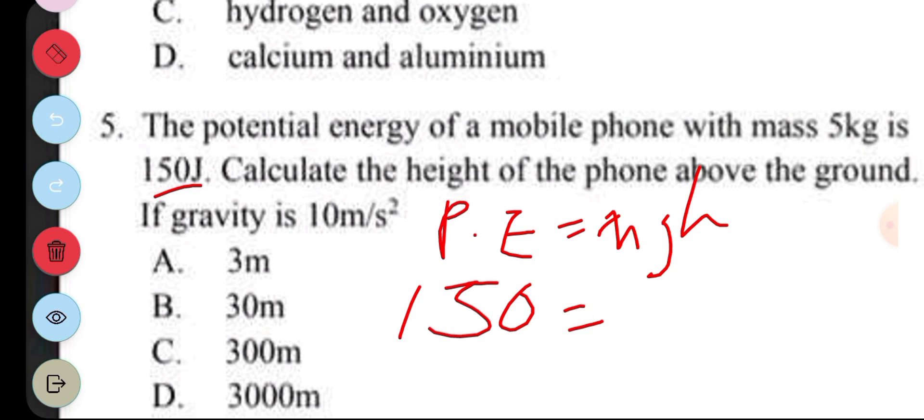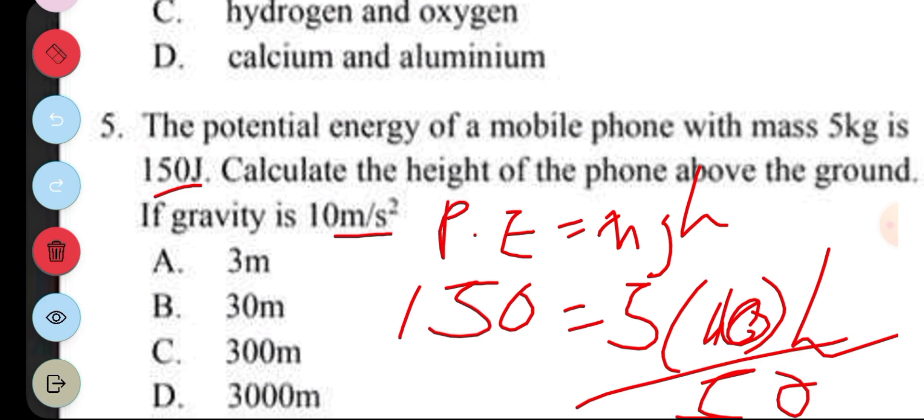150 equals mass is 5, gravity acceleration is 10. So you are going to have, you are going to be dividing both sides by 50. 50 cancels 50. You end up with 3. So the height is 3 meters.